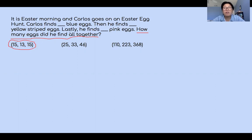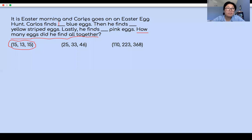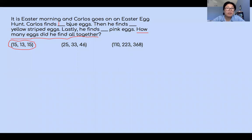Let's insert the numbers. Carlos finds 15 blue eggs, then he finds 13 yellow striped eggs, and lastly he finds 15 pink eggs. So how many eggs did he find all together?